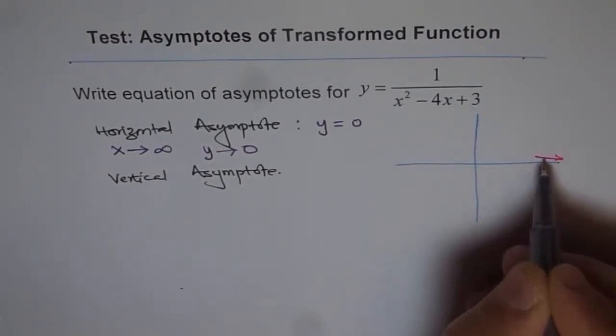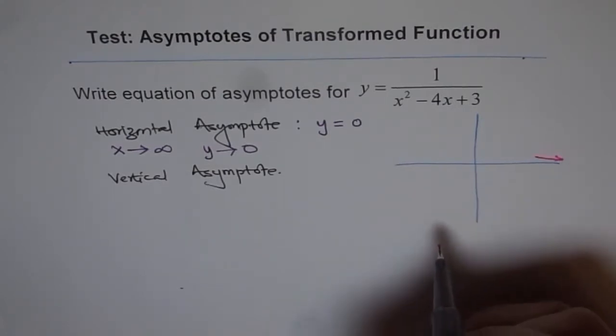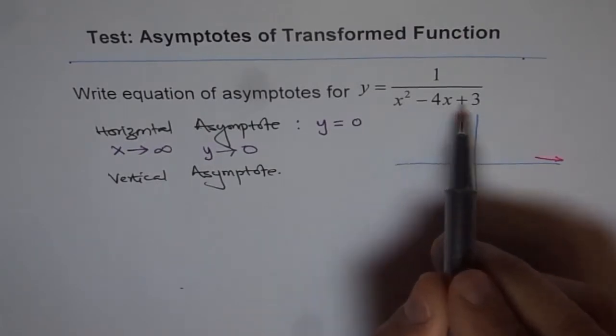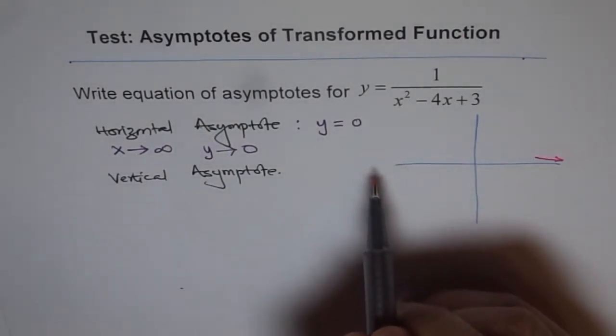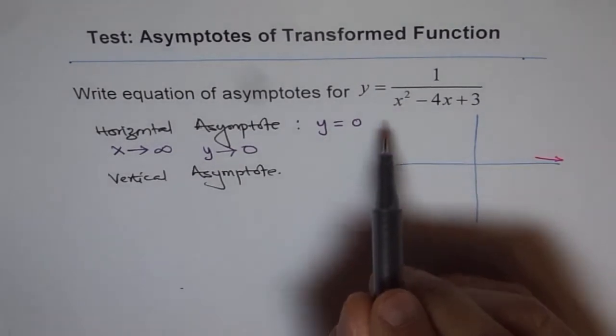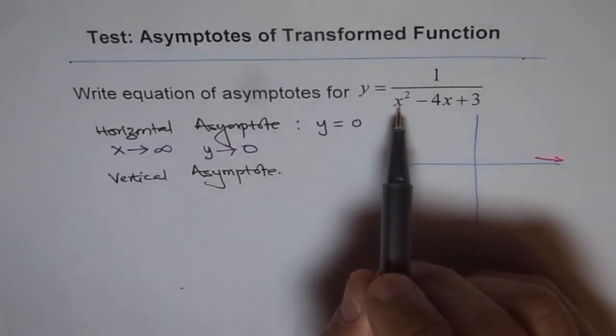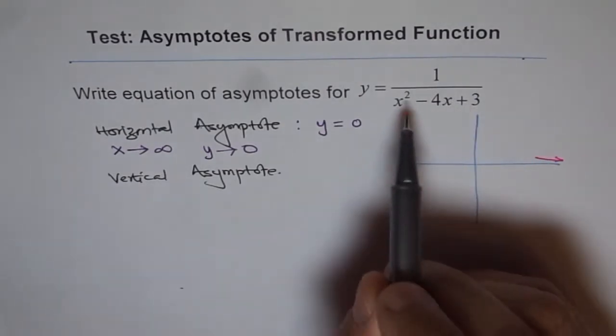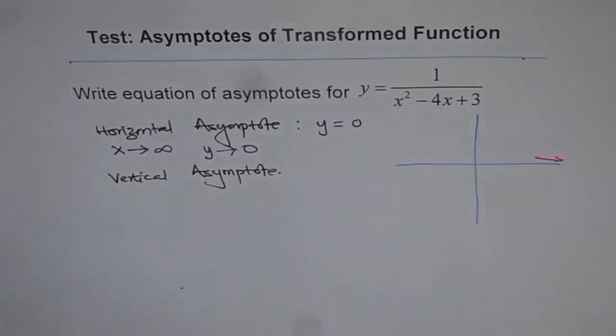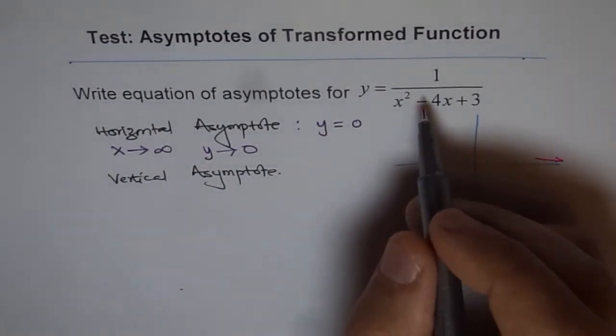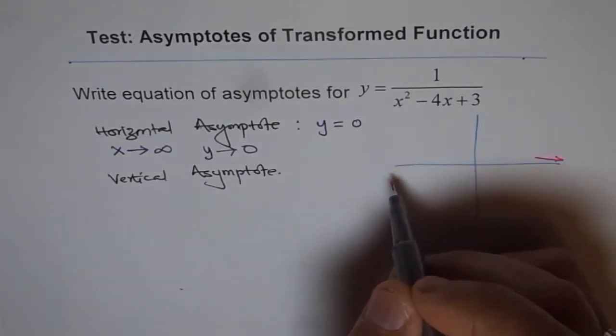If I write a very large negative value for x, what happens? Since this number is squared, it will be positive itself. So it will still approach 0 from the positive side.